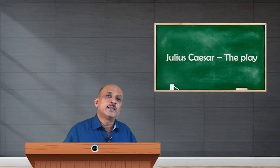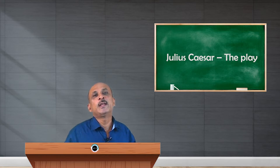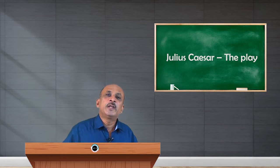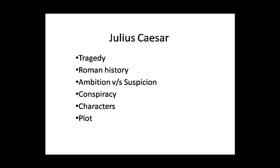The play takes up the days of Julius Caesar's life during 50 to 40 BC. Julius Caesar, who was ruling Rome, was not officially crowned as king, but still enjoyed all the power and administration. The play centers around this period, the prime time of Caesar's life.